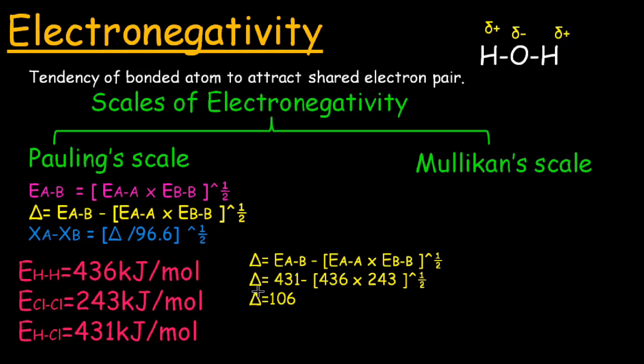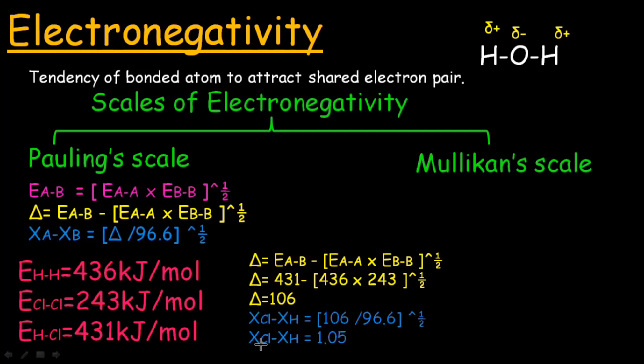You can find the value of delta, which equals 106. Then divide 106 by 96.6 and take the square root. You will find that the difference in electronegativity between chlorine and hydrogen is 1.05. If the difference in electronegativity between two atoms is less than 1.2, the bond is non-polar and the electrons are equally shared between the two atoms.